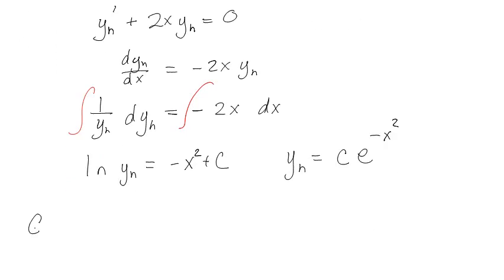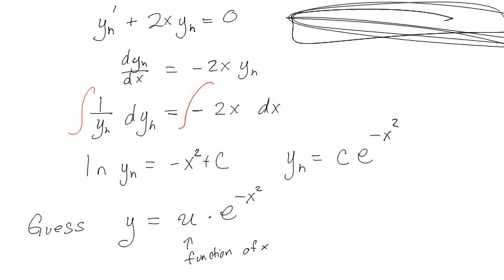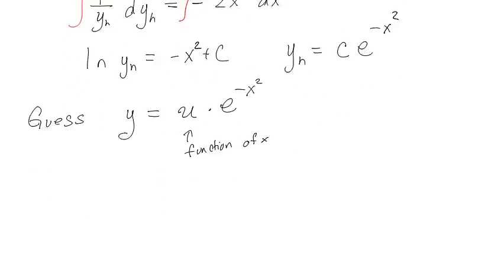Now we guess a solution. The homogeneous solution looks like C e to the minus x squared, so I'll guess that the actual solution is y equals u(x) times e to the minus x squared, where u is some unknown function of x. Most differential equations can't be solved by hand — we're learning a special subset. We'll use what we know about verifying solutions.